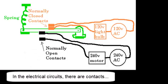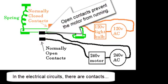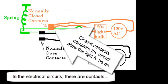In the electrical circuits, there are contacts. Open contacts prevent the motor from running. Closed contacts complete the circuit, allowing the light to be on.